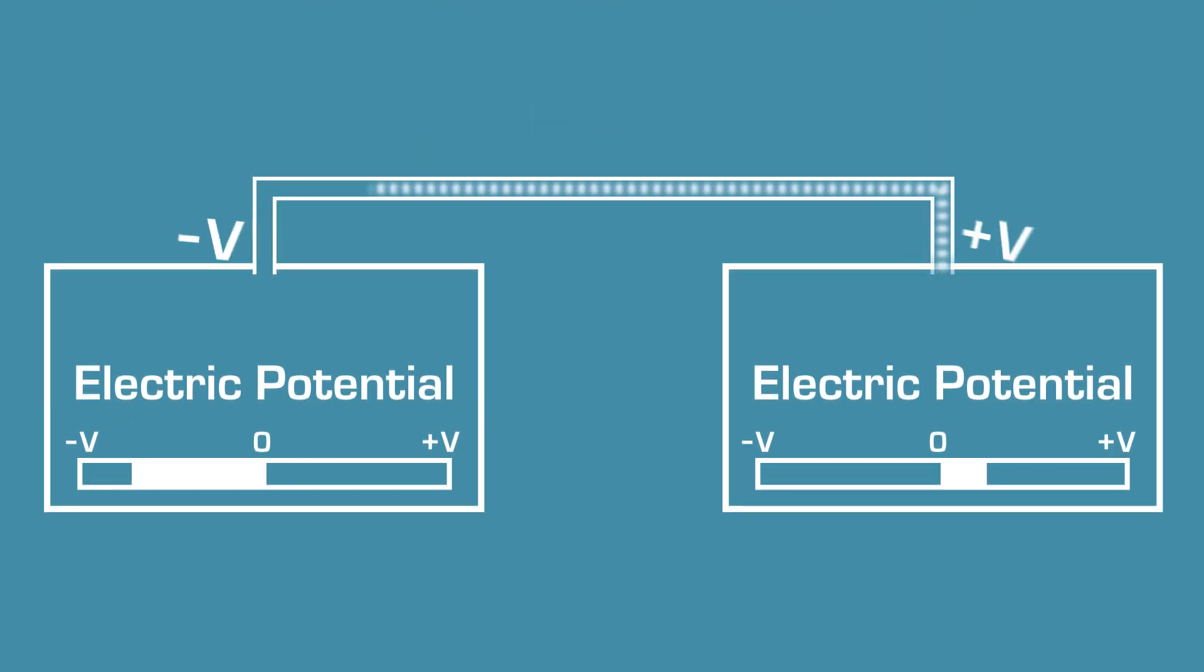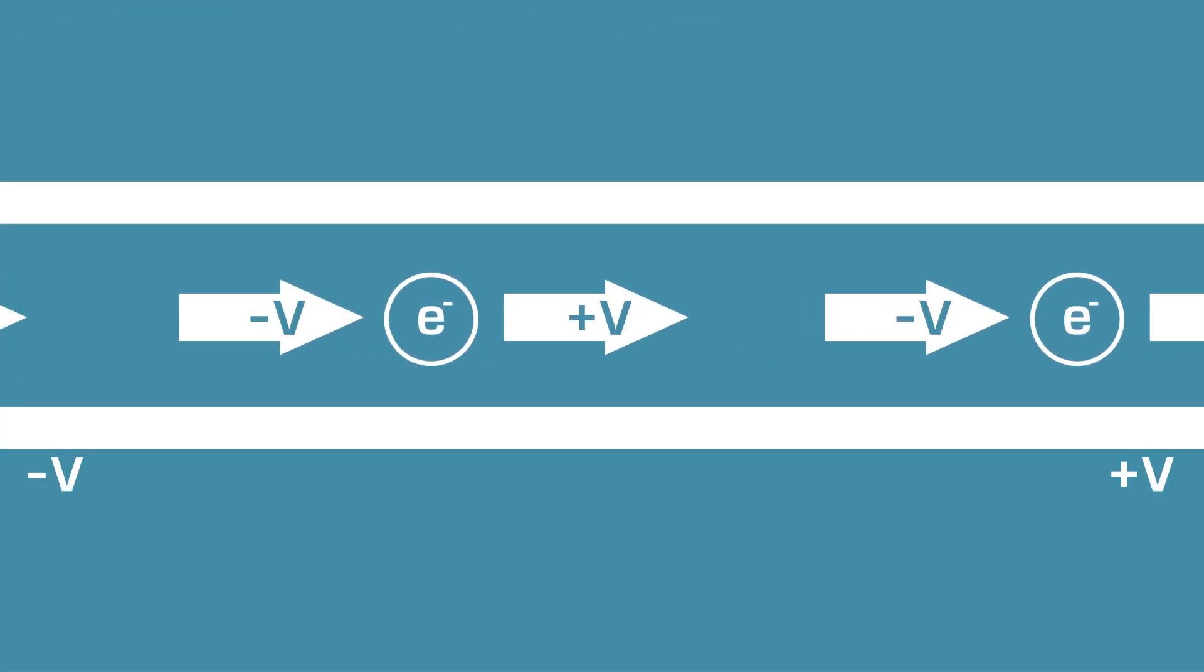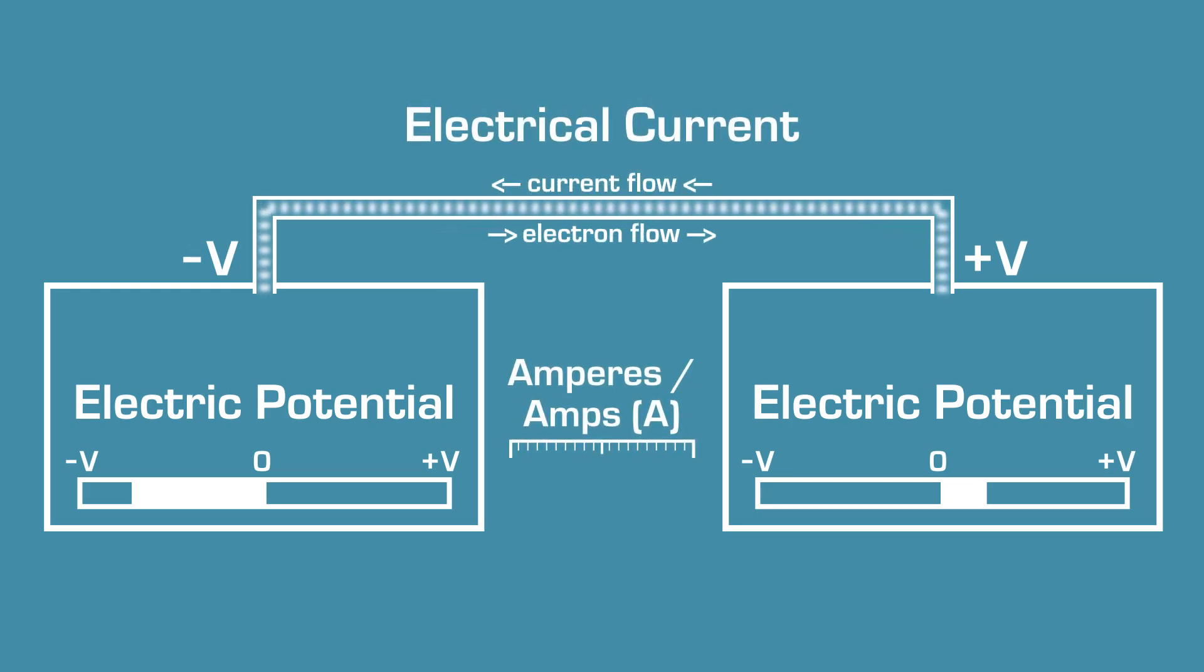If we connect the two areas with a material that allows charges to flow, we make a circuit. Charges will be pushed and pulled through the circuit in an attempt to balance the fields. We call this movement an electrical current and measure it in amperes.